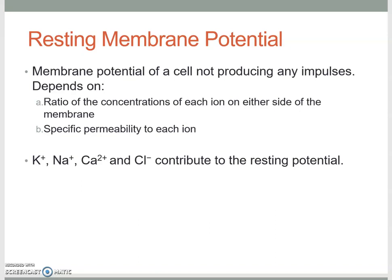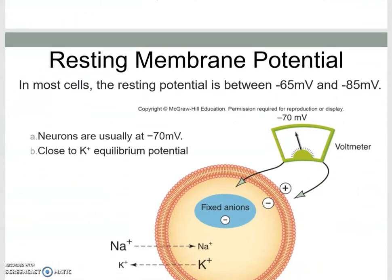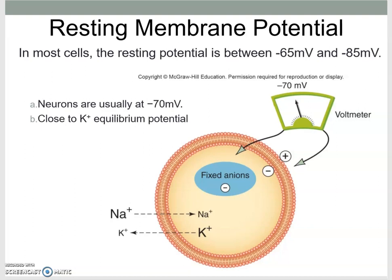The resting membrane potential is the contribution of each one of the ions that are players, and the concentrations inside to outside — the ratio of the concentrations of each ion on either side of the membrane. The main players are sodium and potassium, but also calcium and chloride contribute to the resting potential. If you were to stick a voltmeter into an excitable membrane, you would measure approximately minus 70 millivolts. It depends a little on the cell — it could be somewhere between minus 65 and minus 85 — and we'll see different types of cells where you have variants from the minus 70 millivolts.